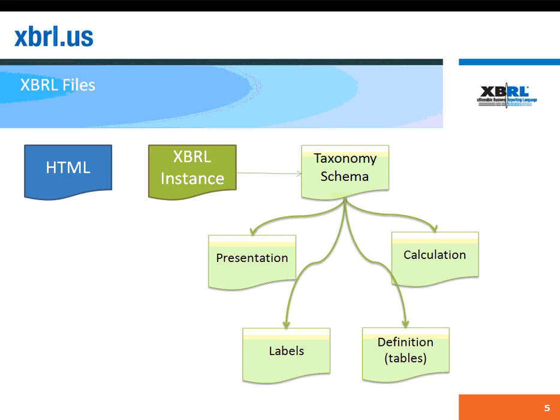To show the difference between XBRL and iXBRL, I'm going to look at the set of files used in a normal filing with the SEC. In a regular filing, you normally have a combination of files: an HTML document of the filing, which is used by people to read the data but is not easy to process systematically. Along with it is an XBRL instance document and a supporting company extension taxonomy schema with its associated link basis — presentation, calculation, definition, and labels.